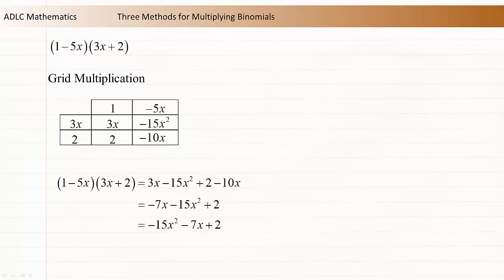The terms of a polynomial are often written in descending order by degree. Usually this means putting the largest exponents first and the smallest one last. So the binomial 1 minus 5x times the binomial 3x plus 2 is equal to negative 15x squared minus 7x plus 2.